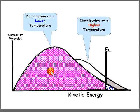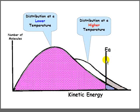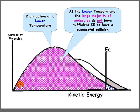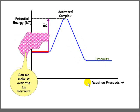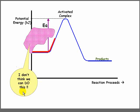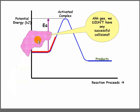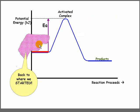In a rather silly way, personifying molecules, we can hopefully understand better how temperature affects the rate of a reaction. Remember the kinetic energy distribution? The number of molecules on one axis and kinetic energy on the other. This curve is the distribution at a lower temperature — we have more slow molecules and fewer fast ones. The activation energy is fixed. So at the lower temperature, the large majority of the molecules do not have sufficient kinetic energy for a successful collision. On the potential energy diagram, they can't make it over the EA barrier — they just don't have the energy. No reaction for them.